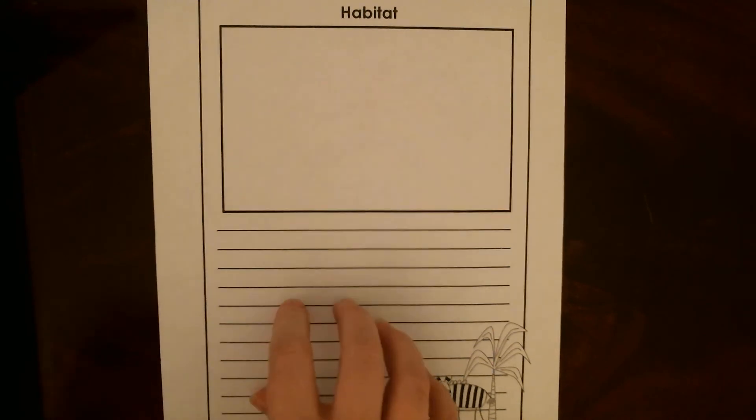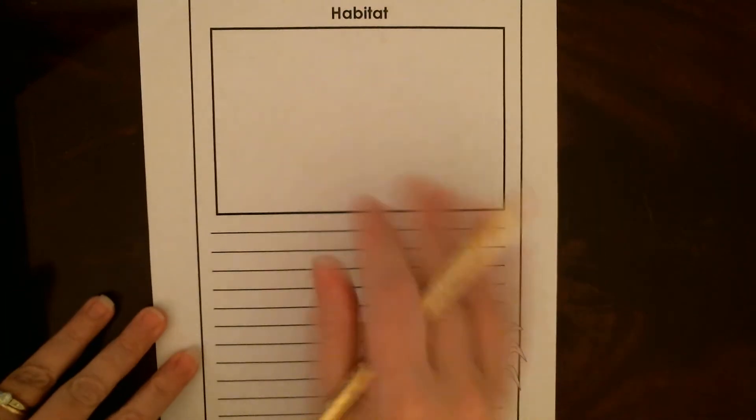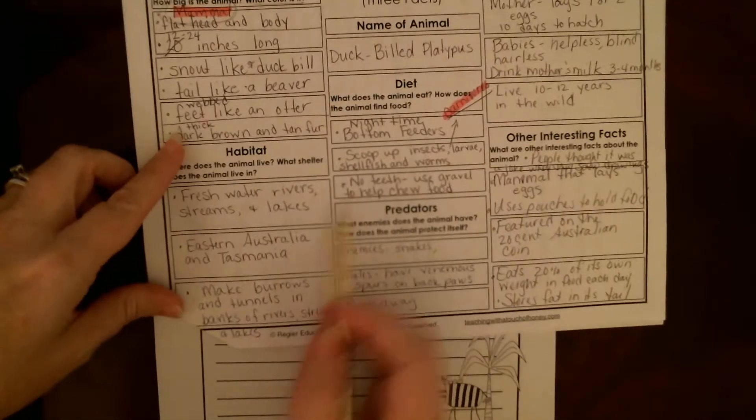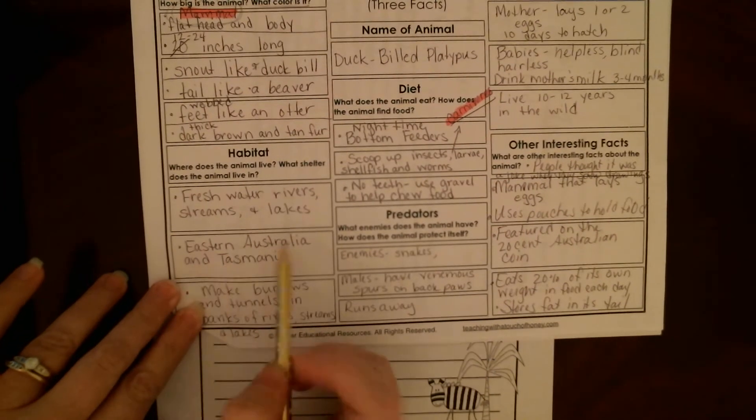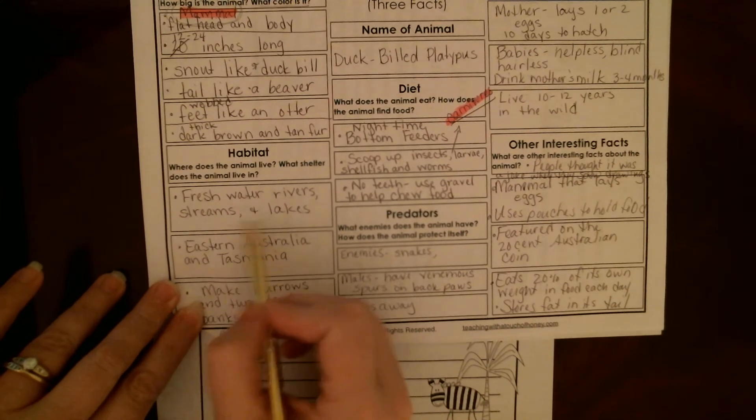All right, so when I researched my duck-billed platypus I learned that it lives in eastern Australia and Tasmania, that it lives in freshwater rivers, streams and lakes, and then it makes burrows and tunnels in the banks of those.